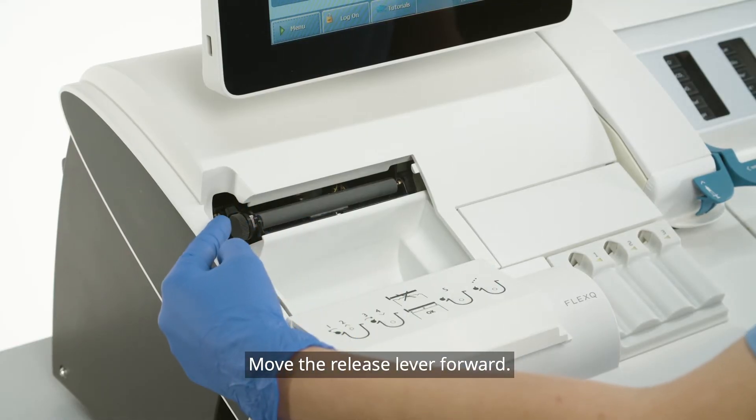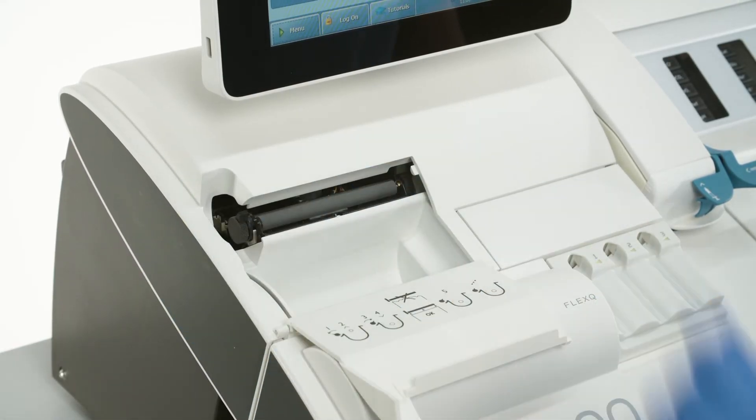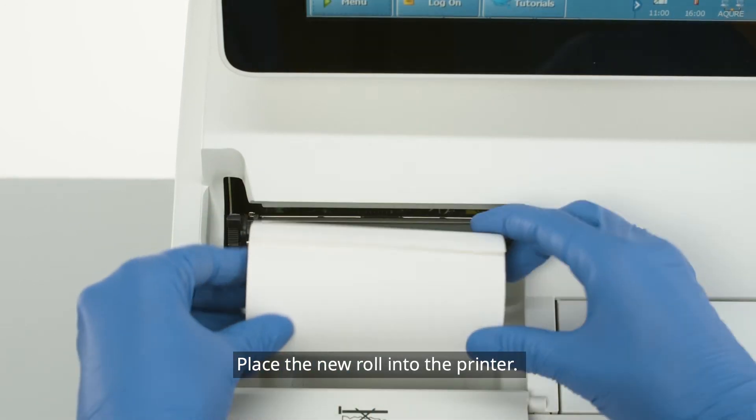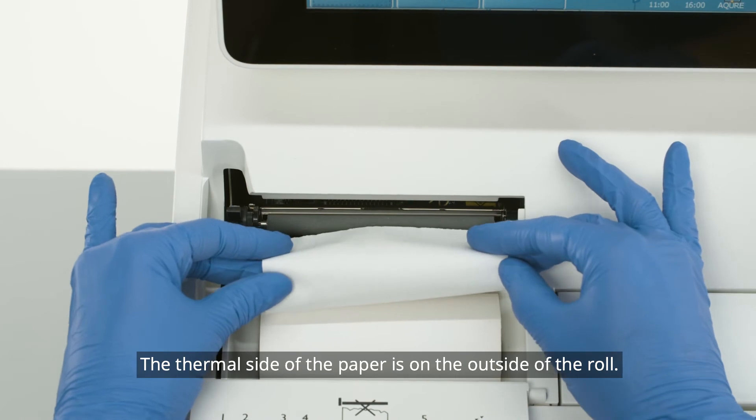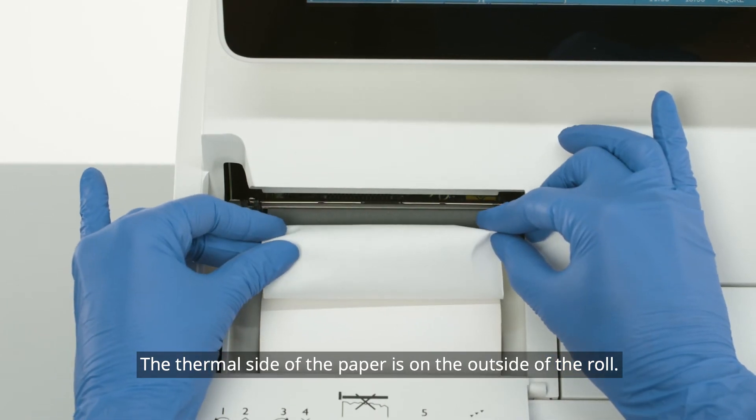Move the release lever forward. Place the new roll into the printer. The paper unreels from underneath the roll. The thermal side of the paper is on the outside of the roll.